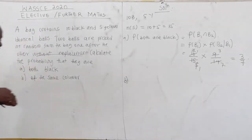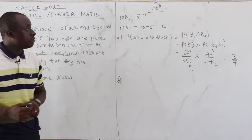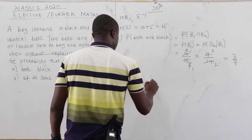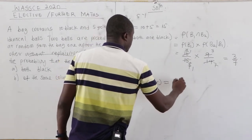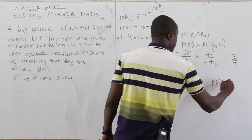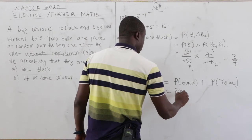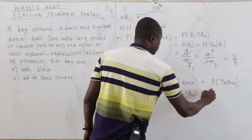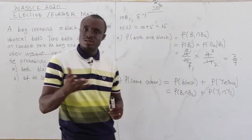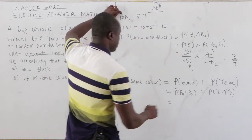For the second part, we want the probability that the two balls are of the same color. We have two colors, so either both can be black or both can be yellow. So P(same color) = P(B1 ∩ B2) + P(Y1 ∩ Y2). We already know P(B1) = 10/15.